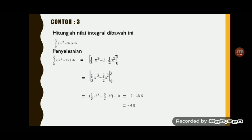Untuk contoh yang ketiga, hitunglah nilai integral dari x² minus 3x dx dengan batas bawahnya adalah 0 dan batas atasnya adalah 3. Diselesaikan dulu, integral dari x² adalah 1 per 3 x pangkat 3, dikurangi integral dari 3x, berarti 3 kali 1 per 2 x pangkat 2. Sehingga bisa ditulis 1 per 3 x pangkat 3 dikurangi 3 per 2 x pangkat 2, dengan batas bawah 0 dan batas atas 3.